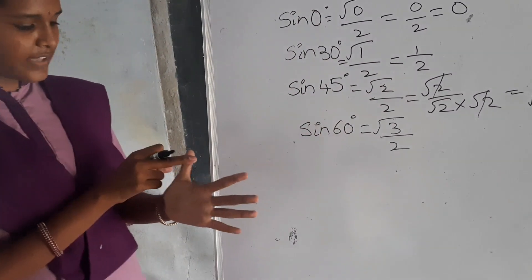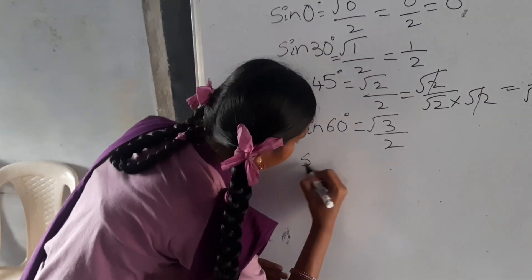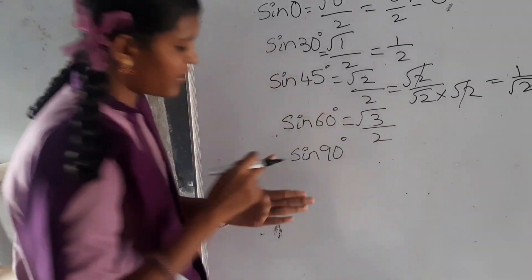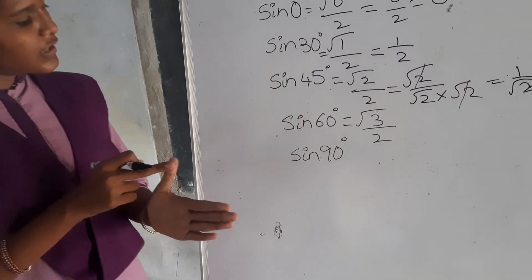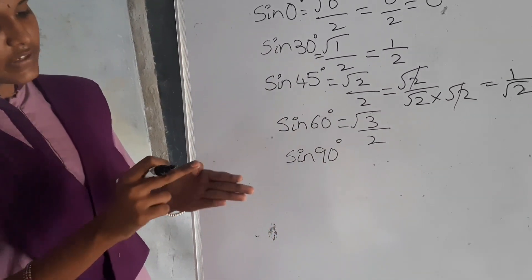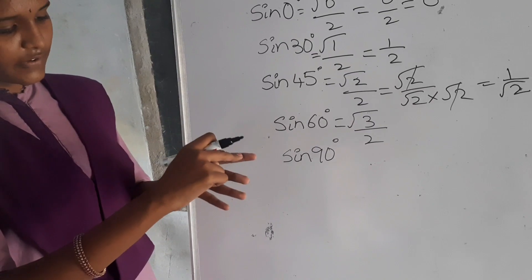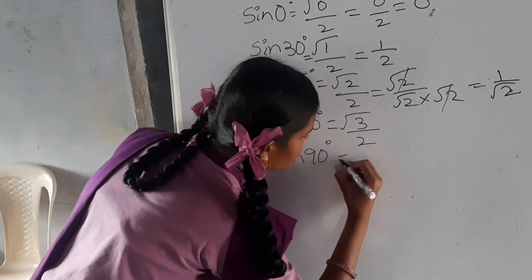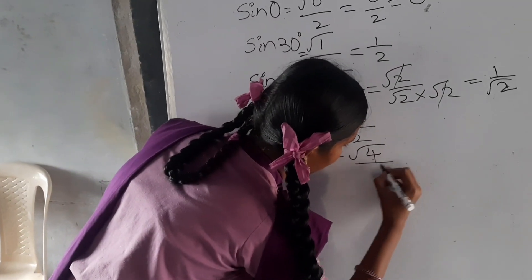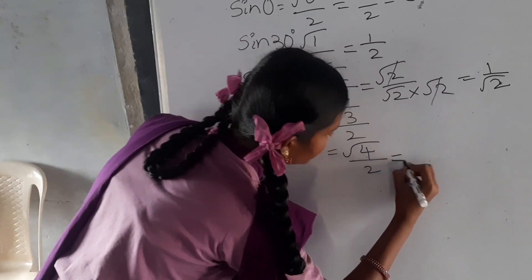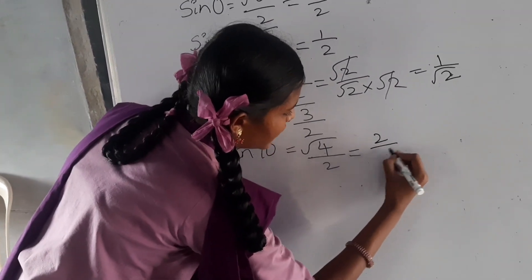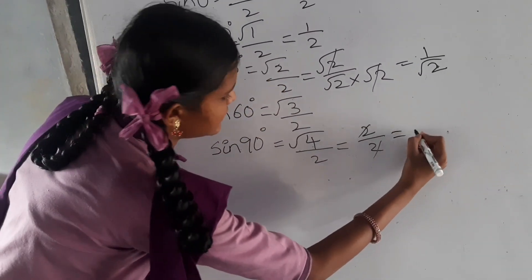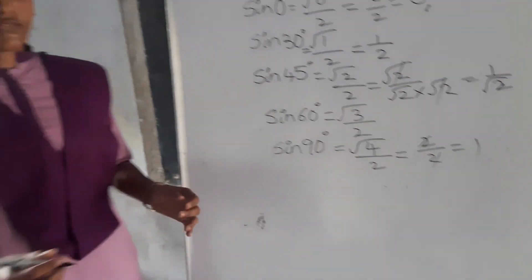Let us find the value of sin 90. We have assumed that the thumb has 90 degrees. The number of fingers below are 1, 2, 3, 4. So root of 4 by 2. Root 4 is nothing but 2 by 2 — 2 and 2 are cancelled. Therefore sin 90 is equals to 1.